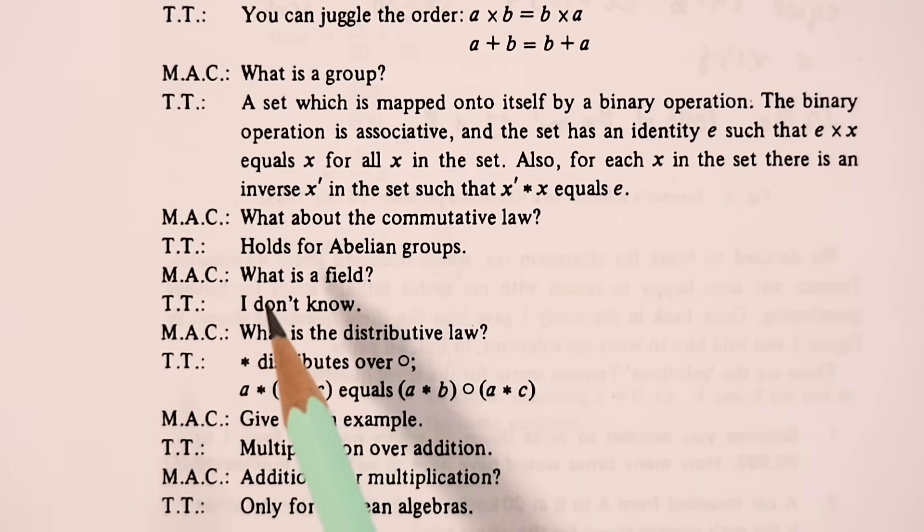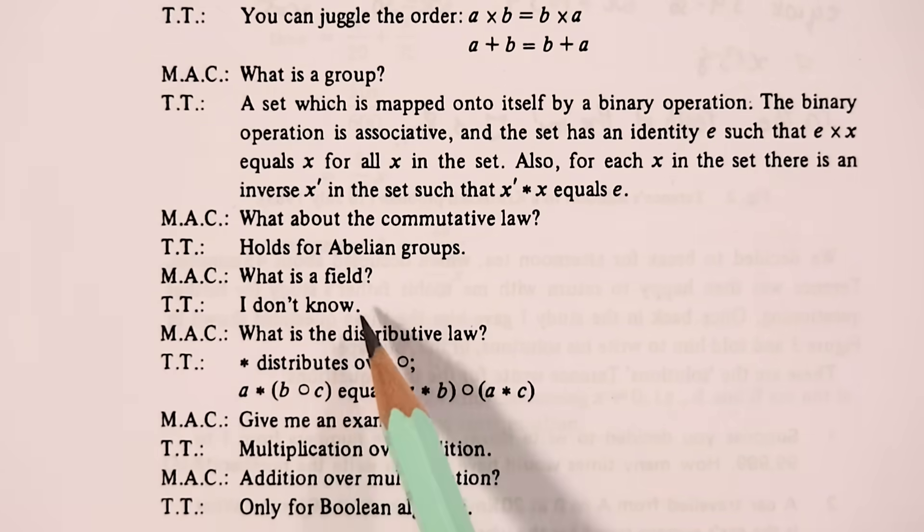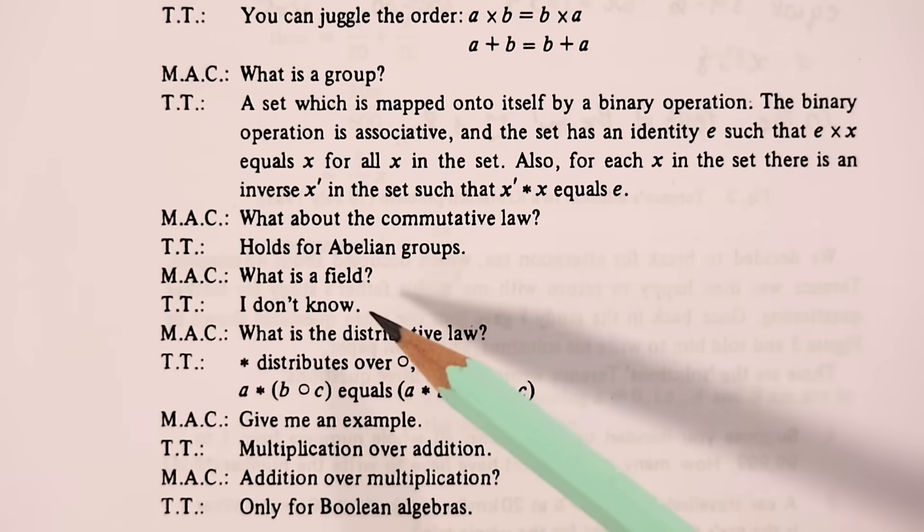However, it seems that the first thing to stump him was being asked, what is a field? Terence replies, I don't know. Given that I barely have a grasp on what a field is now, I think it's forgivable for a seven year old Terence not to know that either.